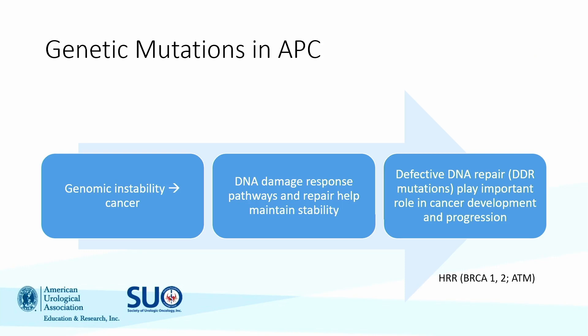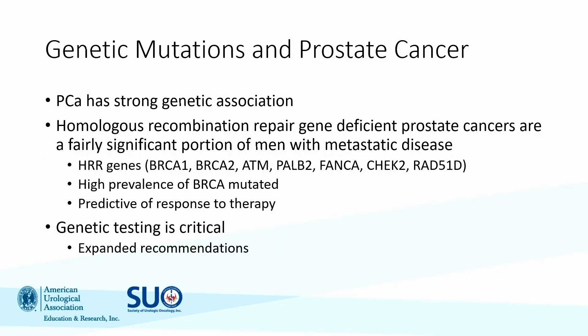When a patient has genomic instability, that is one of many possible causes for cancer. We have evolved very advanced systems of repair — one of which is DNA damage response — which identify, repair, and help our cells maintain stability. However, when we have defective DNA repair systems, cancer can develop and progress. Prostate cancer has a strong genetic association, particularly homologous recombination repair gene deficient prostate cancers, with upwards of 20–25% of patients with advanced prostate cancer harboring these mutations.